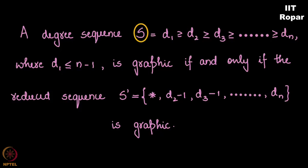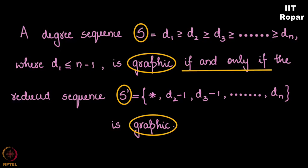So a sequence S is graphic if and only if the reduced sequence is graphic. Please note this phrase 'if and only if' is very important. Why? Because if the reduced sequence is graphic, then the given sequence is graphic.